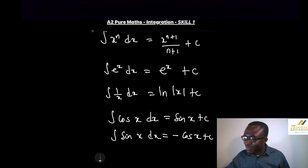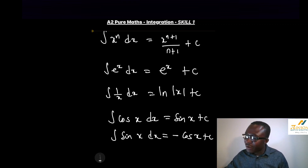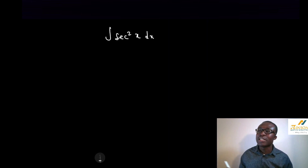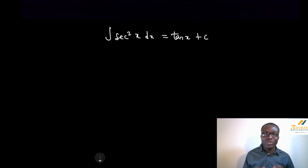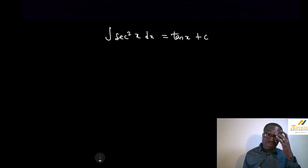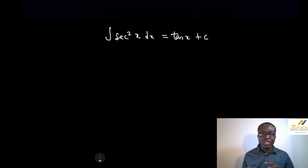Another standard to know: when we integrate sec squared x with respect to x, we get tan x. Don't forget to add the C. When you integrate sec²x with respect to x, you get tan x. This is in the formula book — you can always refer to it and it will help you.